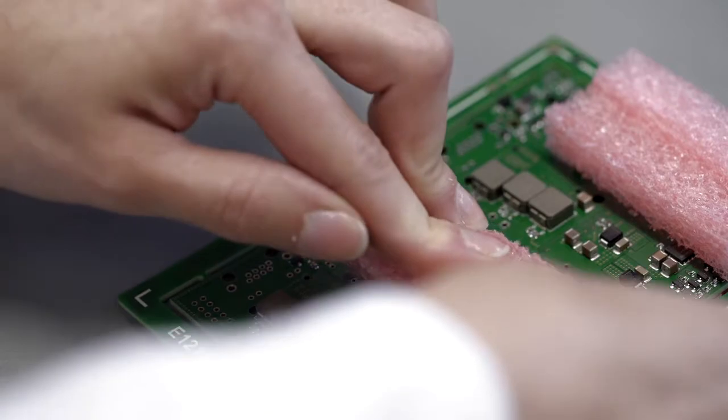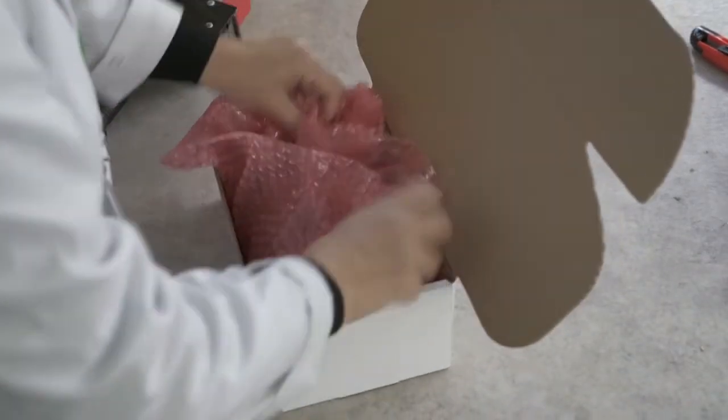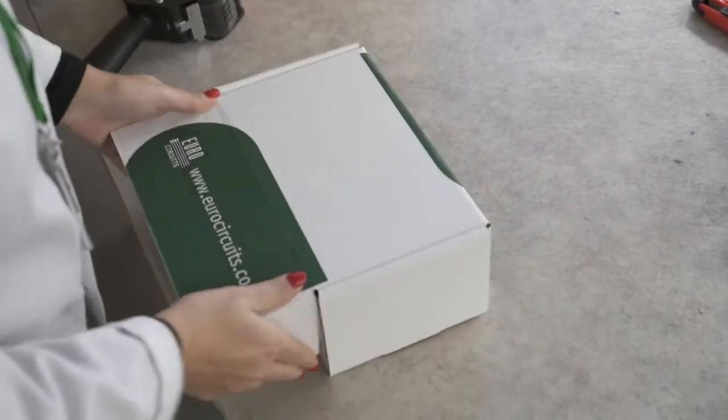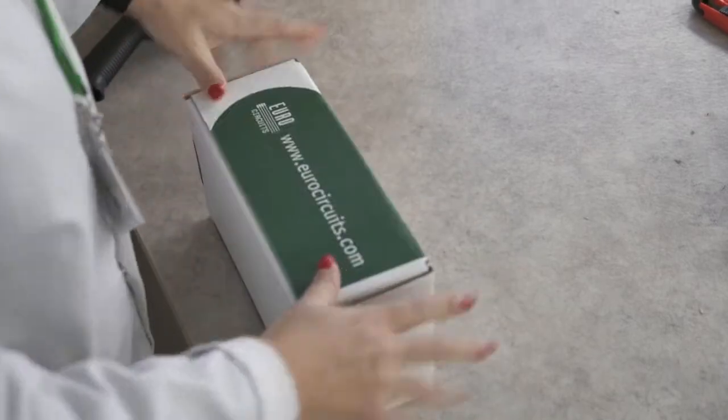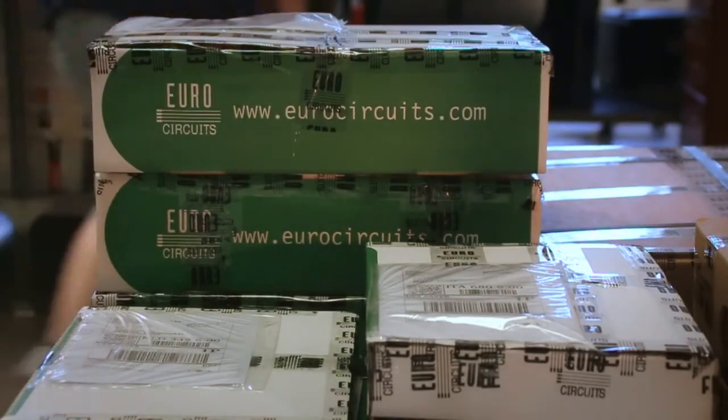Finally the boards are placed in corrugated boxes with package fillers to prevent the boards from moving in the box. The boxes are labelled and shipped by courier and arrive at the destination in the best possible condition.